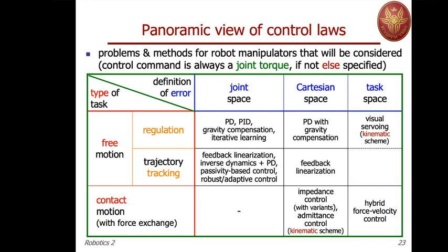Finally, there is a third space of interest: the more general definition of a task space. The task space may coincide with the Cartesian space if our task is defined at the level of the end effector, but there are other situations requiring a special space to define the task. We will handle a specific problem at the kinematic level — the visual servoing case. The bottleneck is mainly in the kinematic transformation, which is the visual servoing Jacobian.